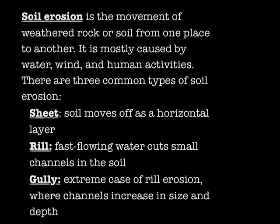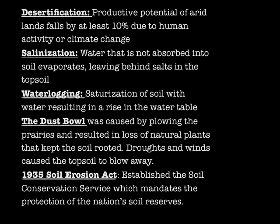Desertification occurs when the productive potential of arid lands falls by at least 10% due to human activity or climate change. Salinization occurs when water that is not absorbed into soil evaporates, leaving behind salt in the topsoil. Water logging occurs when saturation of soil with water results in a rise of the water table. The Dust Bowl was caused by plowing the prairies, resulting in loss of natural plants that kept the soil rooted, and droughts and winds caused the topsoil to blow away.